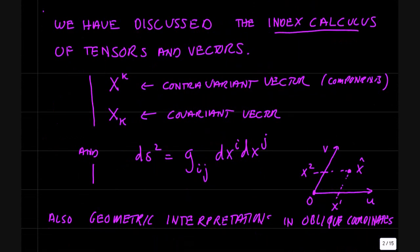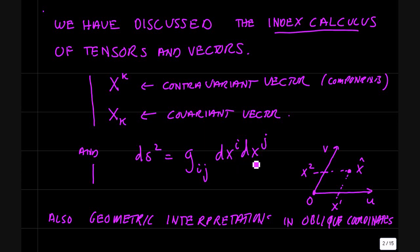In previous videos over last year, we've discussed the index calculus of tensors and vectors, where you have contravariant components of a vector x with a superscript xk and covariant components of vectors, and the metric tensor that converts coordinate differentials dxi, dxj — these are contravariant differentials — converts them using the metric tensor to the square length. We also earlier discussed a geometric interpretation using Euclidean space and oblique coordinates.